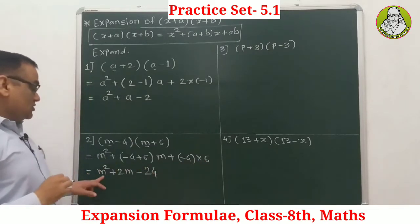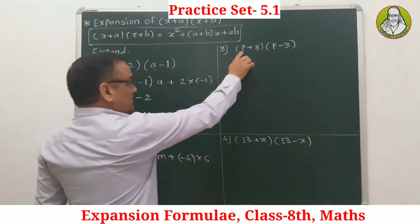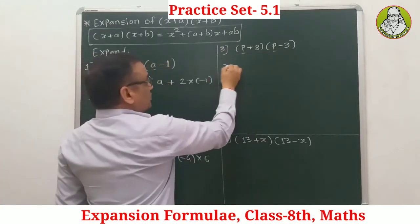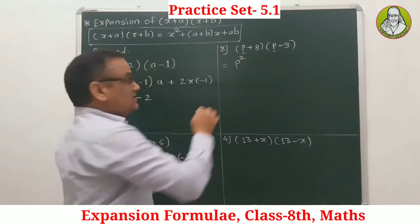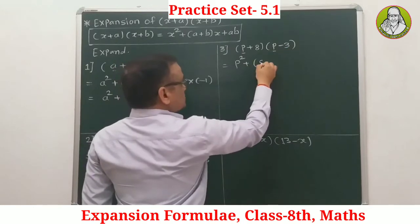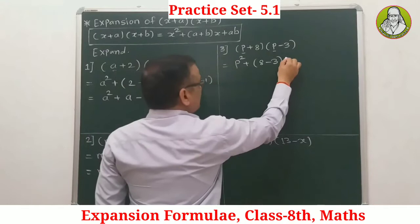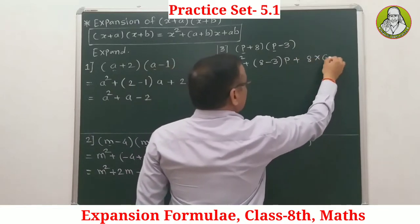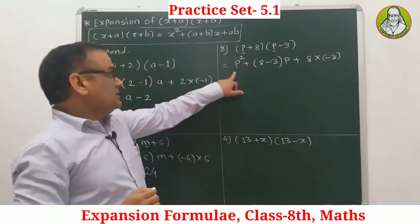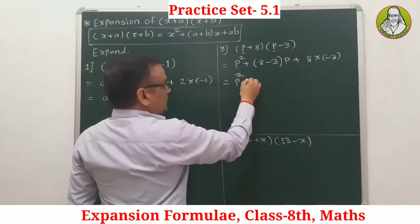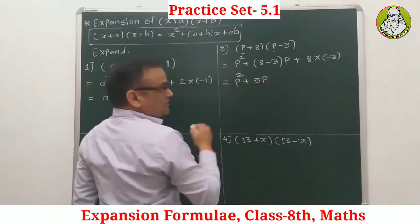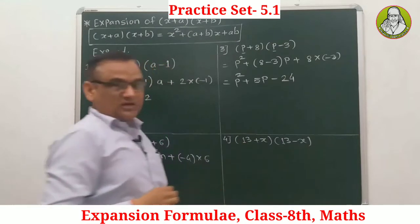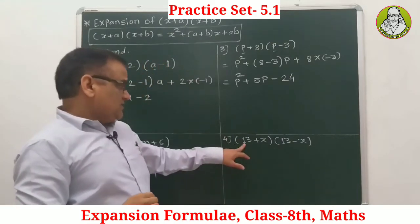Example 3: (p + 8)(p - 3). Equal terms are 'p', so p squared. Unequal terms are +8 and -3. Addition: 8 - 3 = 5, so +5p. Multiplication: positive into negative = negative, 8 × 3 = 24, so -24. Answer: p² + 5p - 24.